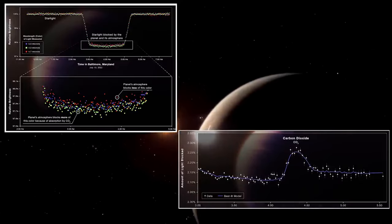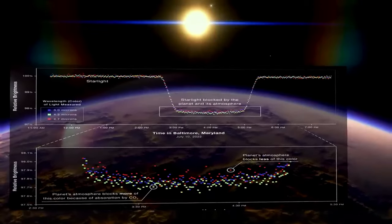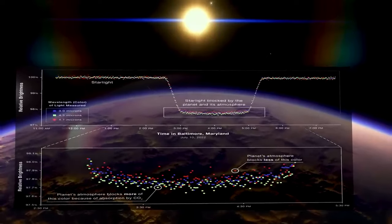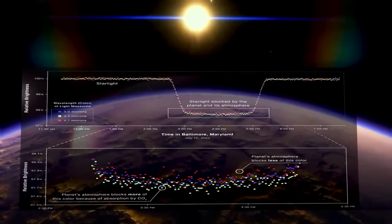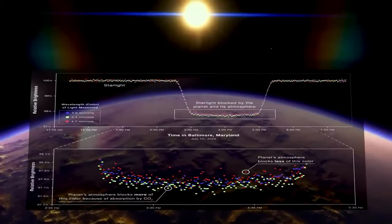Each of the 141 data points on the graph shows the amount of light of a particular wavelength blocked by a planet embodied by its atmosphere.